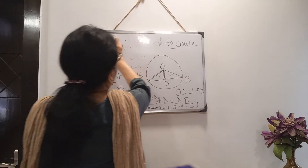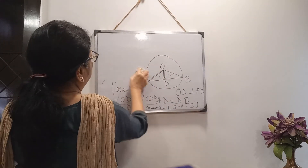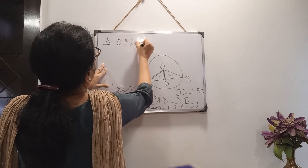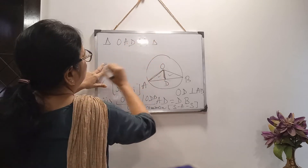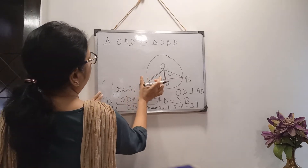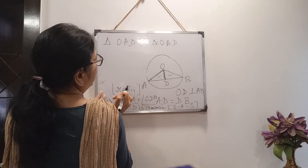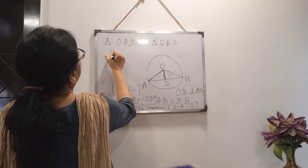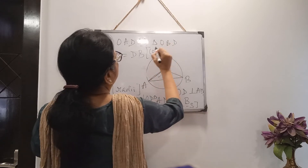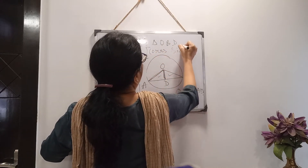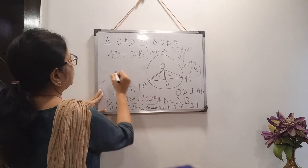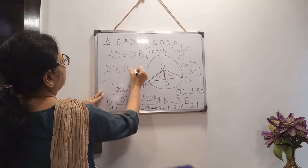we can write that triangle OAD is congruent to triangle OBD. When these two triangles are congruent, corresponding sides of congruent triangles are equal. So we can write AD equals DB. Therefore, D is the midpoint of AB.